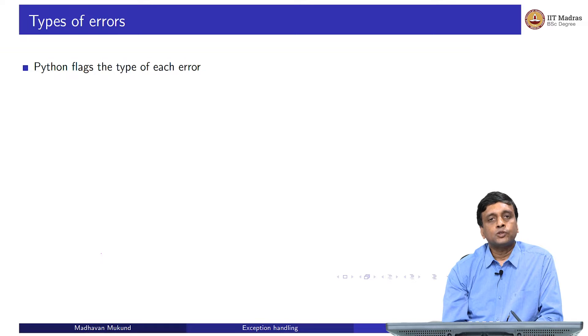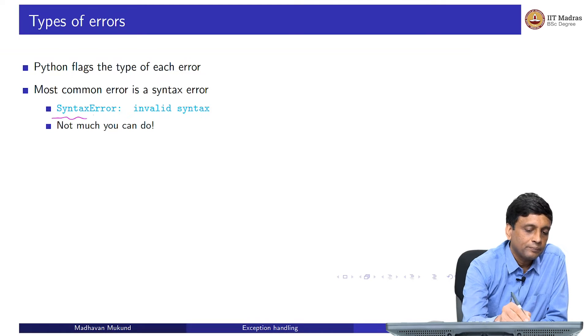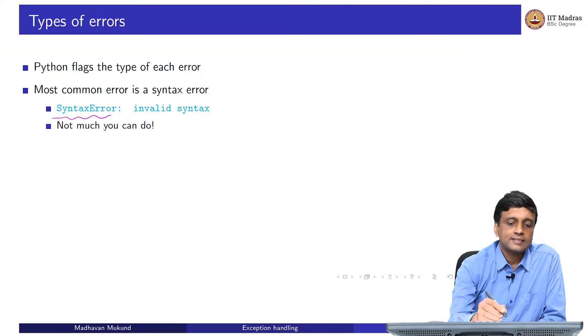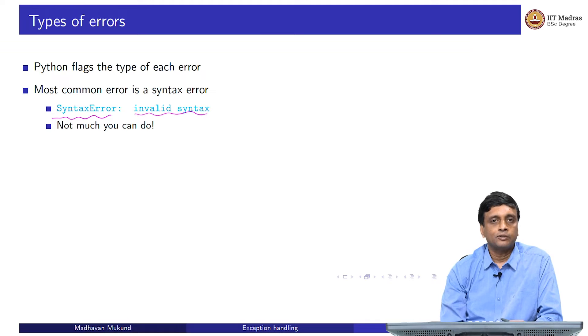The good thing for us is that Python actually gives us information about each type of error. This information comes in two parts. First, there is a kind of a name, a type of error, and the second is a description. The most common type of error is a syntax error. This is not valid Python code. Now, if it is not valid Python code cannot run. And since it cannot run, we cannot take any corrective action about it. So, we will not bother about syntax errors and exception handling because nothing you can do. Syntax errors come before the code runs, exception handling comes when the code is running. Unless you have valid Python code, there is no question of exception handling.